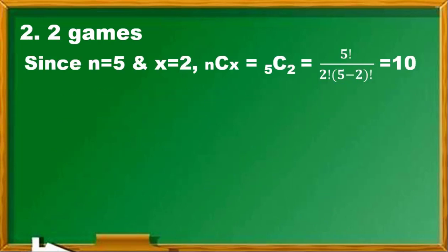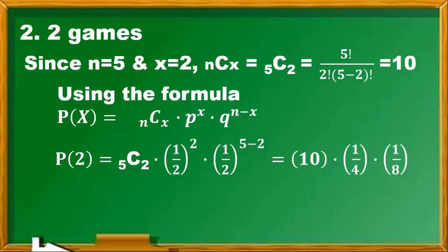For number 2, this is P(2). We have 5C2 equals 10, so plugging in the values: 1/2 raised to 2 is 1/4, then 1/2 raised to 5 minus 2, this is 3, so 1/2 raised to 3 is 1/8. How did we get 5 over 16 as the final answer? 10 times 1 becomes 10, and 10 over 4 can be written as 5 over 2. So 5 times 1 is 5, then 2 times 8 is 16.